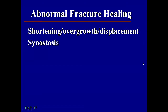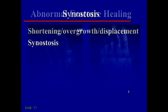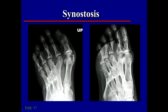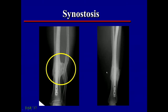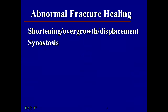Synostosis is what happens when parallel bones both fracture and fuse to each other. For example, here in the foot, these metatarsals have all fractured at the same level, and the callus formation that bridged the fractures also bridged between the different bones. A common place for this to occur is in the forearm or leg. Here in the leg, we had fractures of the tibia and fibula, and these have healed with a synostosis between the two bones, which can result in stiffness, especially in the ankle joint.